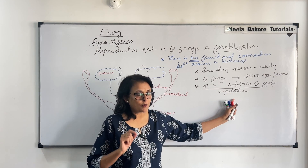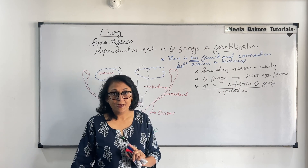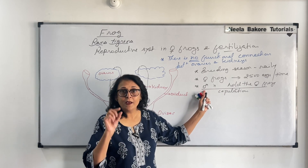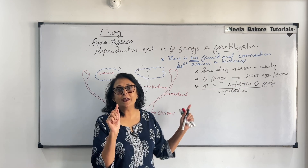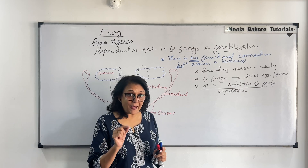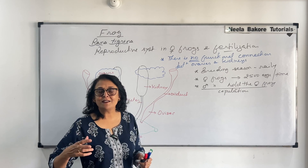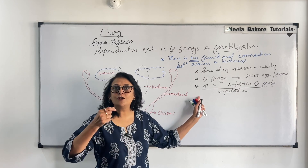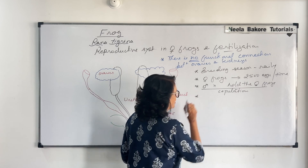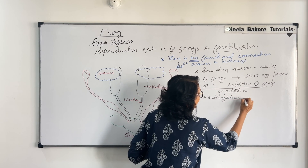Male and female frogs can be differentiated — one difference is that male frogs have a copulatory pad on the first digit of the forelimb. With that pad, the male holds the female. As soon as the female starts releasing eggs, the male frog releases sperms onto the eggs and fertilization takes place. This means fertilization is external and takes place in water.